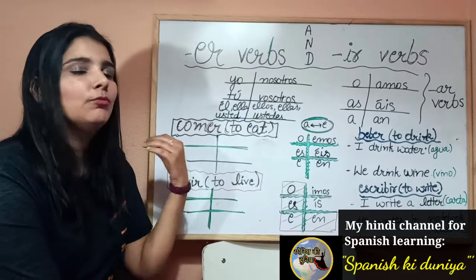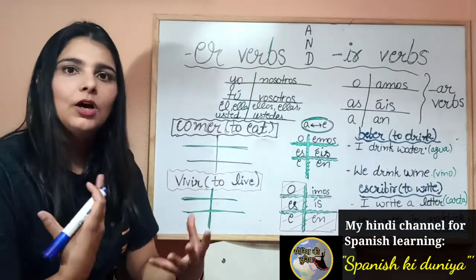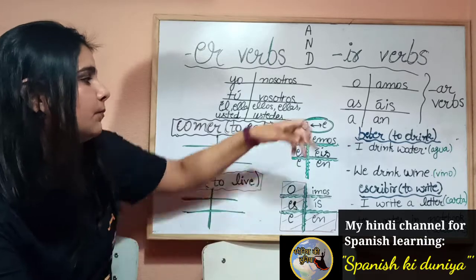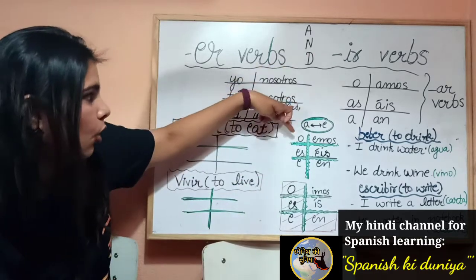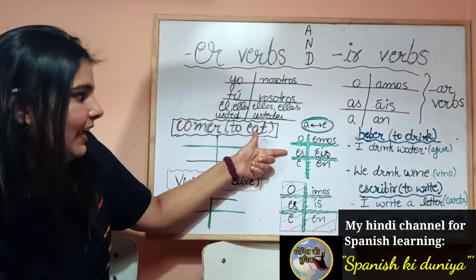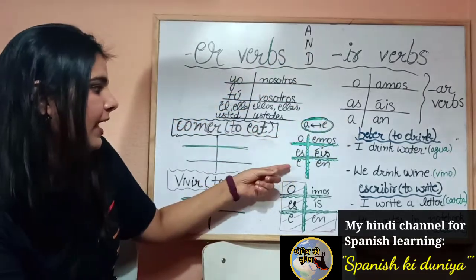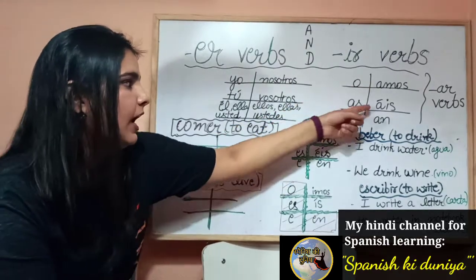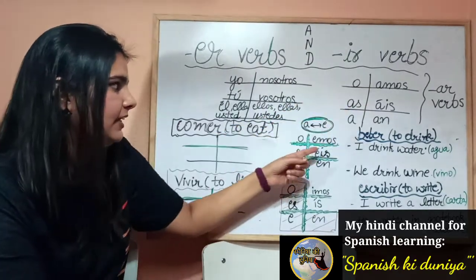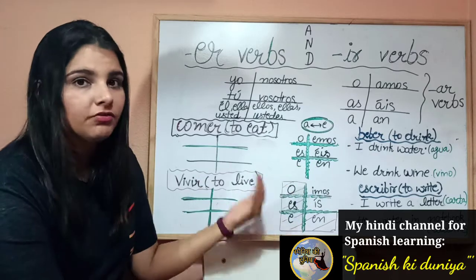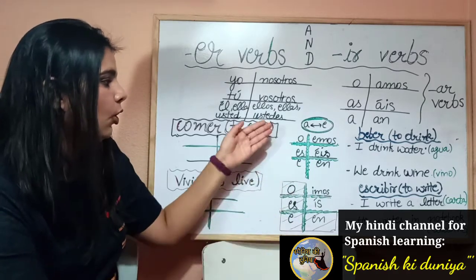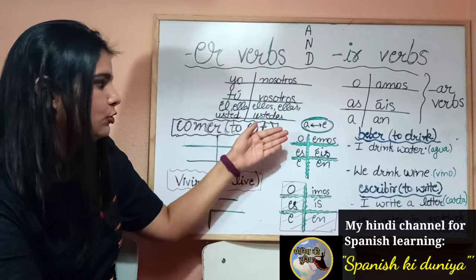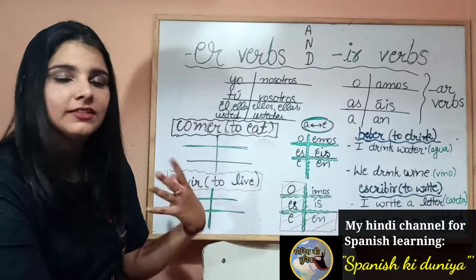I would like you to speak out loud and memorize the pattern. So in place of AS it is ES, in place of A it is E, in place of AMOS it is EMOS, AIS stays AIS, and AN becomes EN. So finally the endings are: O, ES, E, EMOS, AIS, EN — repeat: O, ES, E, EMOS, AIS, EN.